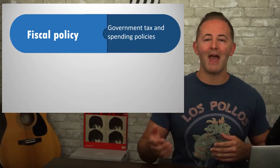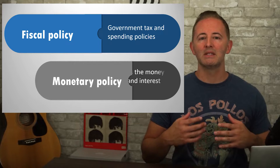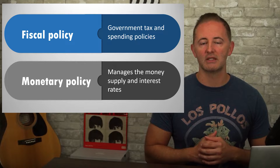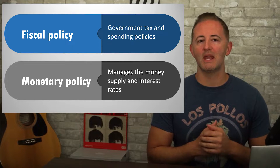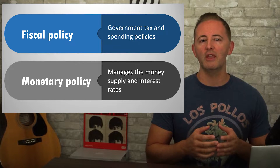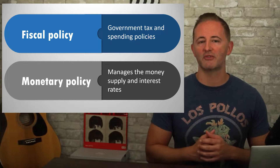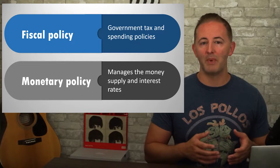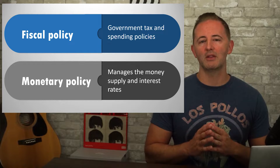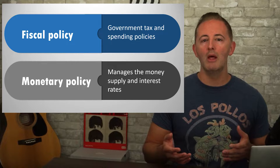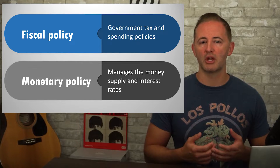There are both fiscal and monetary policies, and each of these can either be expansionary or contractionary. Fiscal policy refers to government tax and spending policies, while monetary policy sets the money supply and the interest rates. If there's a recessionary gap, Congress and the President can use fiscal policy to restore the economy to the full employment level of output by cutting taxes, increasing spending, or increasing transfers. Meanwhile, the central bank — in the U.S., it's the Federal Reserve — can use monetary policy to achieve the same goal by increasing the money supply and lowering interest rates.